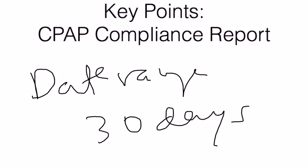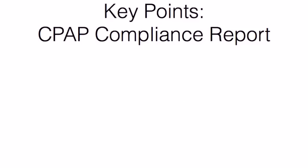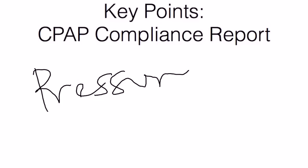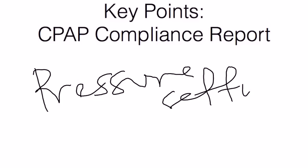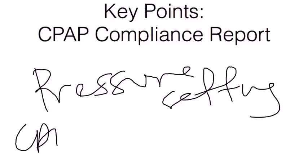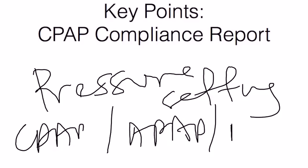The next thing to evaluate is the pressure setting. The pressure setting and pressure range are important, as this will give you an idea of whether the patient is on the exact same pressure settings they were on, so that nothing has been changed in the meantime. Pressure settings may be for CPAP, APAP, or even bilevel — do check that when you're looking at the CPAP report.